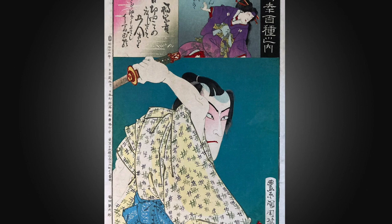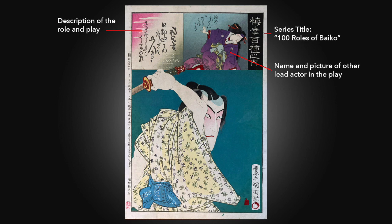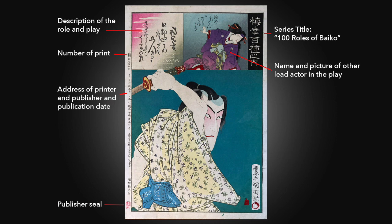Let's dive into this print from the series. It's a vertical print called Oban. Starting from the top left, we see the description of the role Baiko's playing and the play name. Next to that is a small image of a supporting actor. To the right in the black rectangle is the series title, 100 Roles of Baiko. The main area is our star Baiko in a one-half length portrait. On the left border we see the print number, the address of the printer and publisher along with the publication date, and at the bottom left the publisher's red seal. On the right side we see the carver's name and Kunichika's signature.